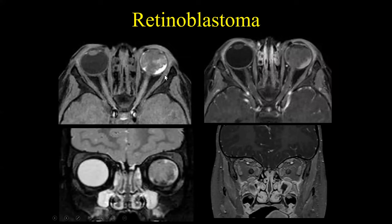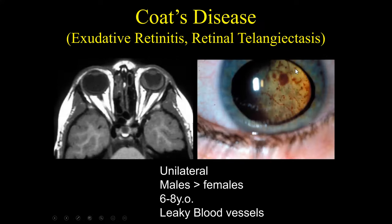When looking at retinoblastomas, we look for calcification on CT, but you also want to perform MR. On MR, especially in retinoblastoma, you look for whether it extends posteriorly to involve the posterior aspect of the globe and whether there is abnormal extension along the optic nerve. In this case, we see the normal appearance of the optic nerve on the right, and a little bit of enhancement on the left, indicative of the retinoblastoma extending along the posterior aspect of the globe and involving the most anterior aspect of the optic nerve.